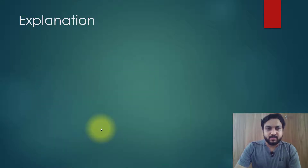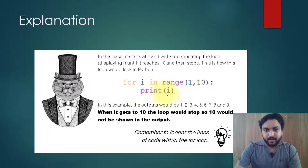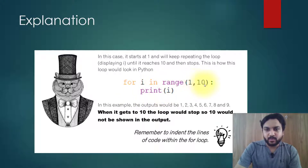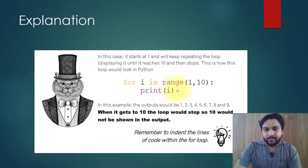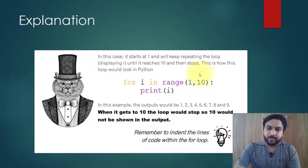Here is an example: for i in range(1, 10), print i. It means that it will repeat from 1 to 10 and it will print 1 to 9. In this example the output would be 1, 2, 3, 4, 5, 6 up to 9.